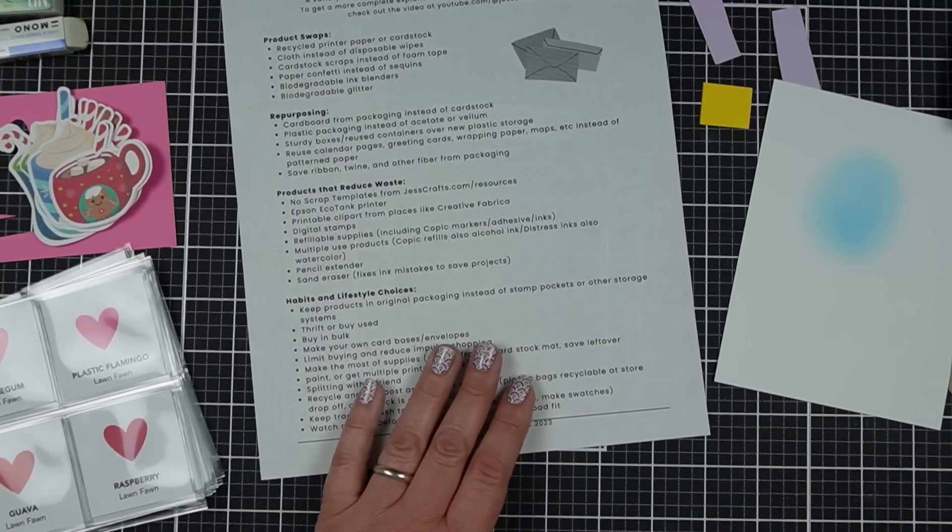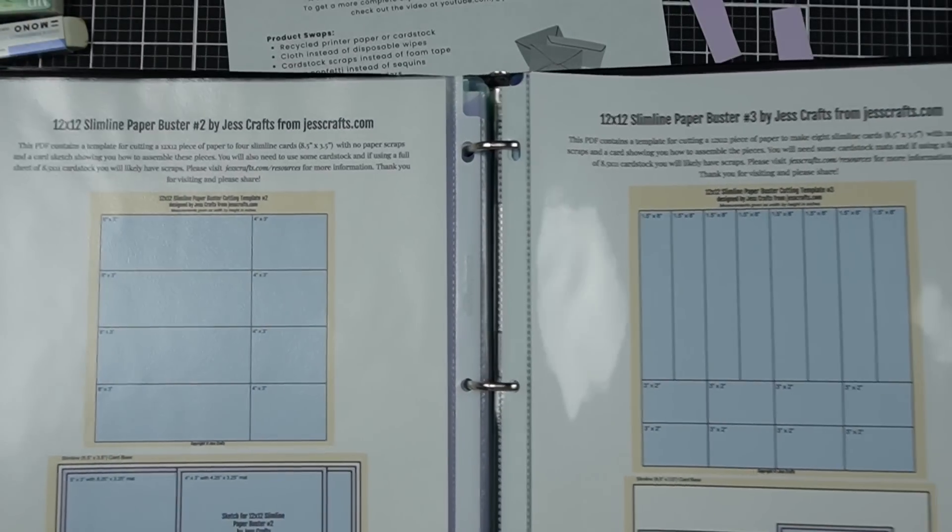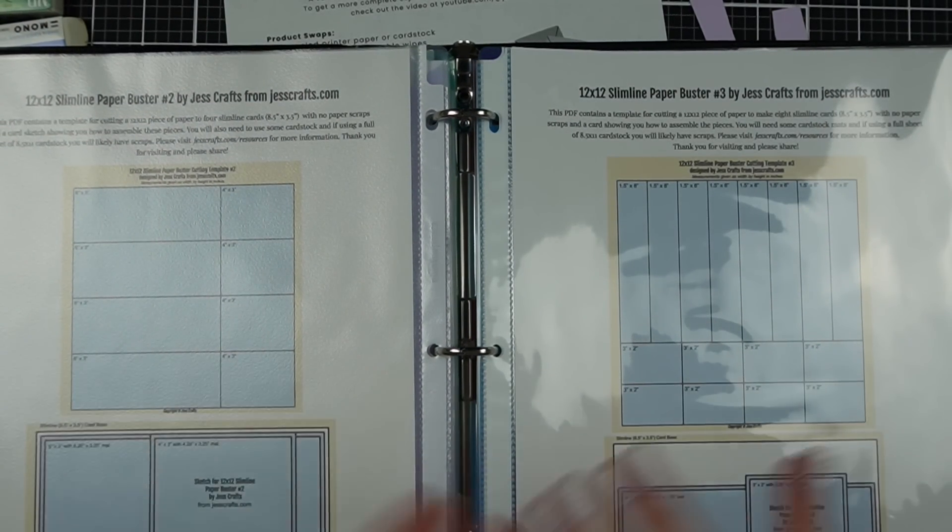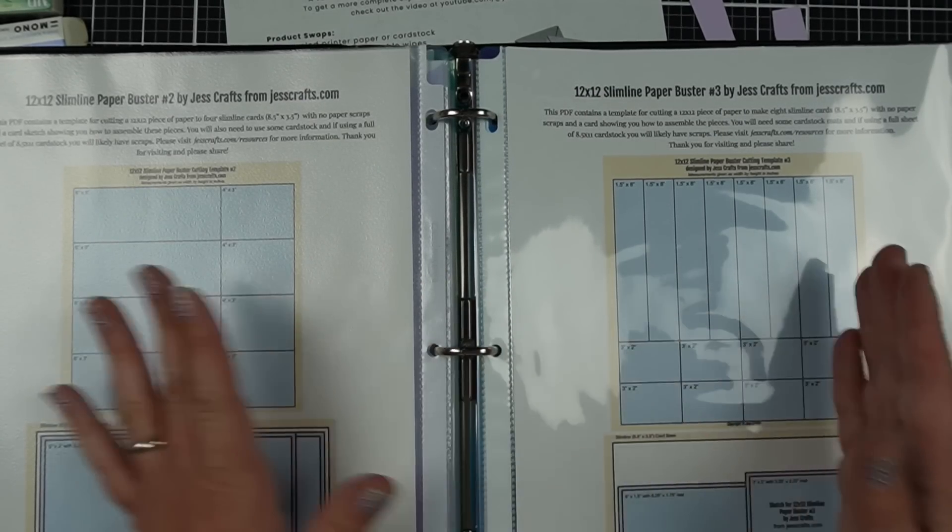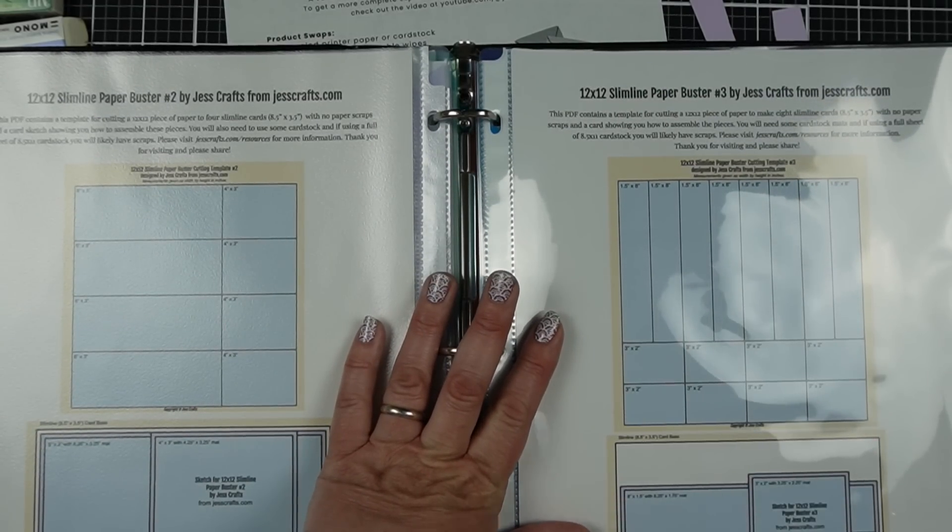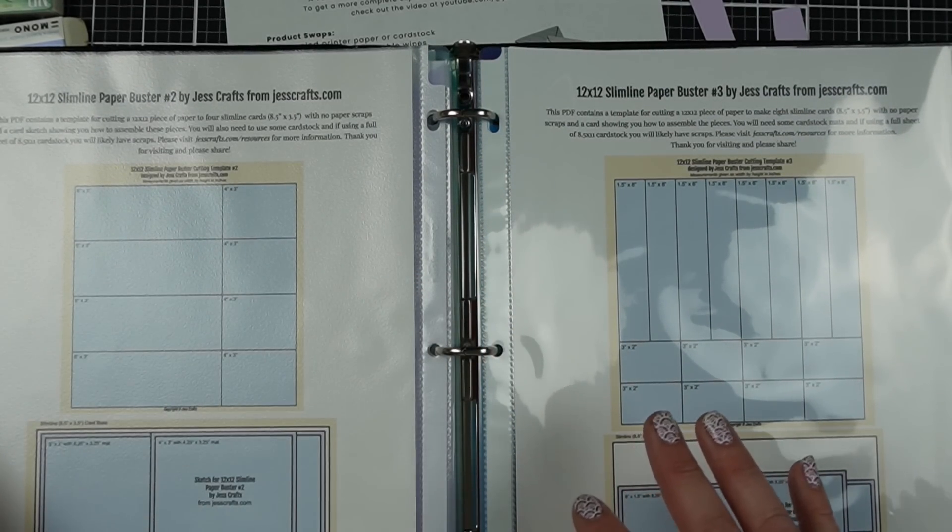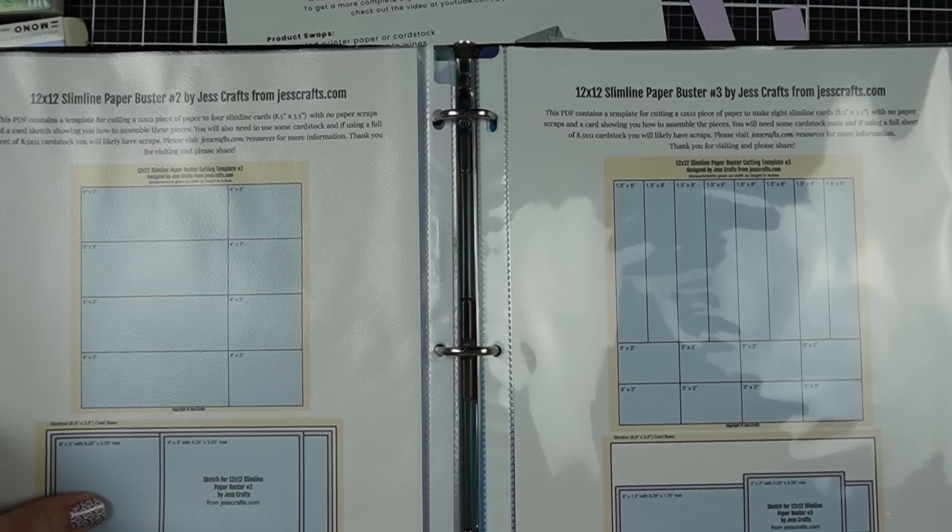Products that reduce waste. I have my no scrap templates. I mean, they're free. So is that a product? I don't know. But they come for 12 by 12, 6 by 6, 8 by 8, 6 by 8, 8 and a half by 11, like pretty much every paper size you could think of. I'll have templates for it and then tell you how to make cards with that paper without making scraps. So that's great because there's no scraps involved there. And it really encourages you to use what you have. And so you can find those on jestcrafts.com slash resources.